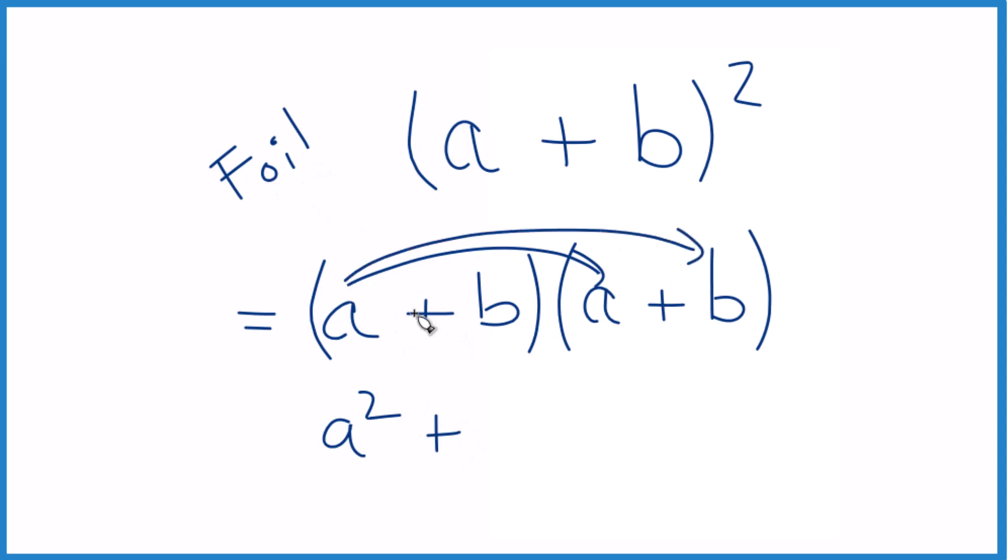So these here are the outside, a times b, that gives us ab. We do the inside, that's b times a. We call that ab, same as ba.